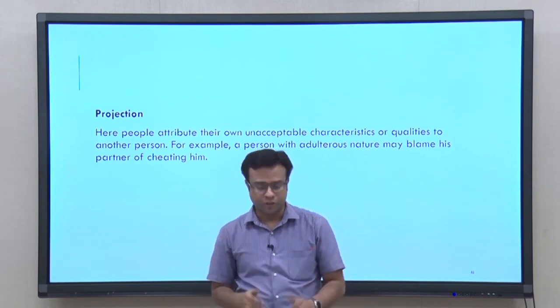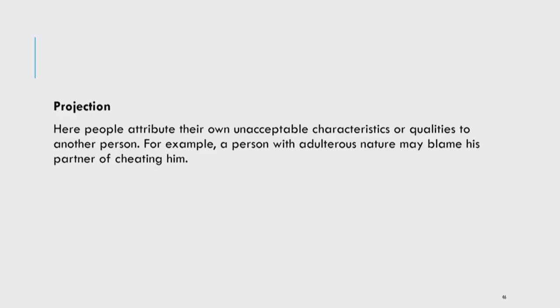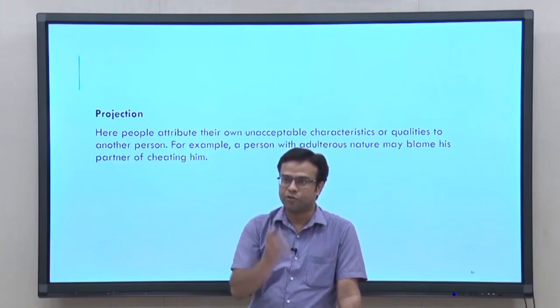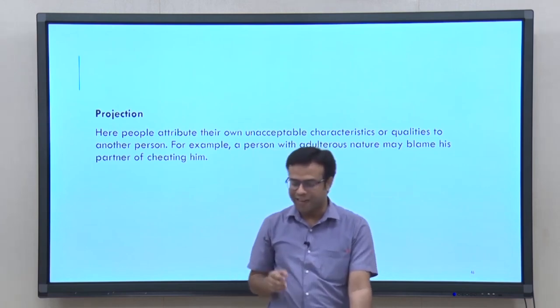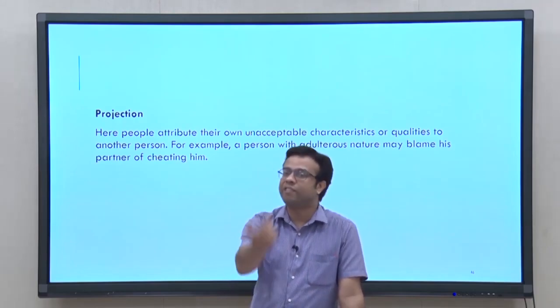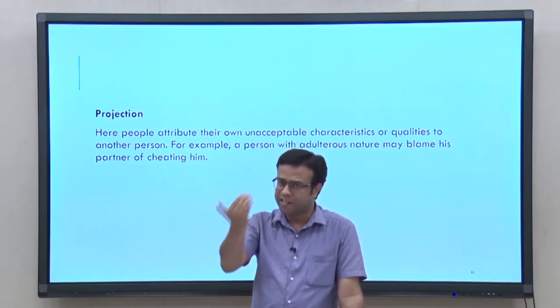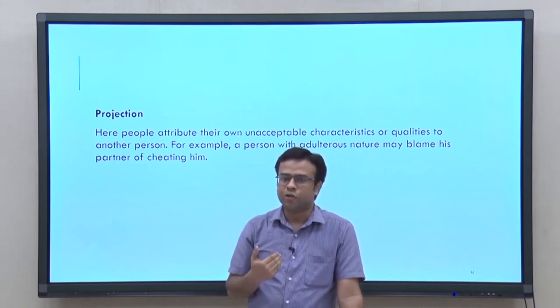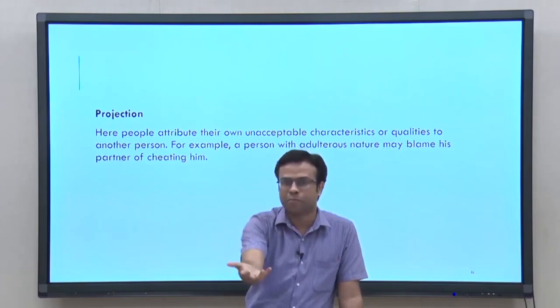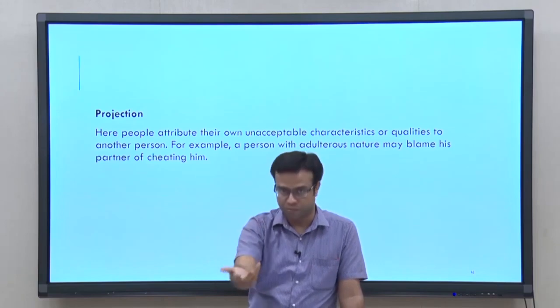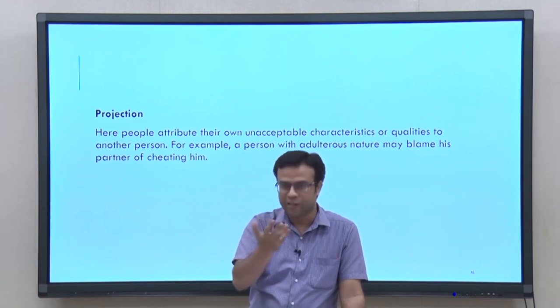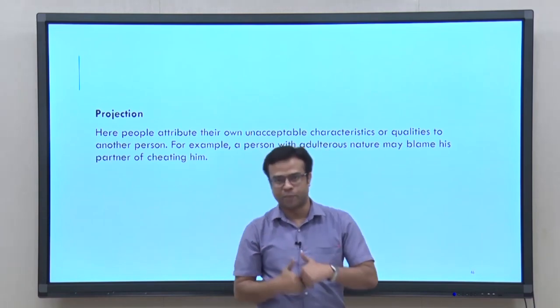The next defense mechanism is projection, where people attribute their unacceptable characteristics or qualities to another person. You project your own unacceptable qualities onto someone else rather than accepting they are in you. For example, a person with adulterous desires may blame their partner of cheating, projecting their own unacceptable impulses onto their spouse. This is projection as a defense mechanism — because accepting those qualities in yourself would feel uncomfortable.